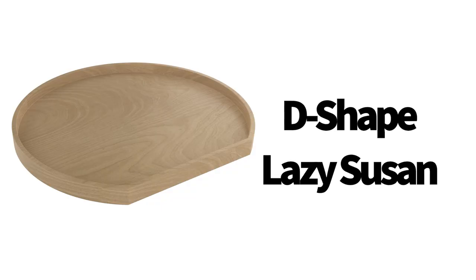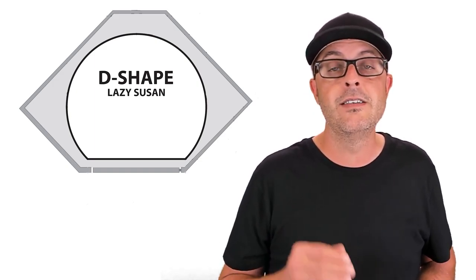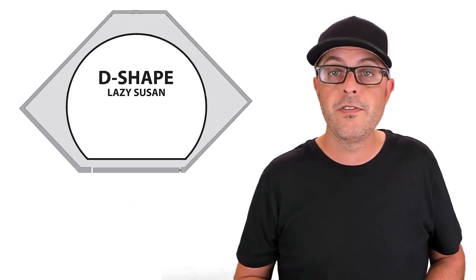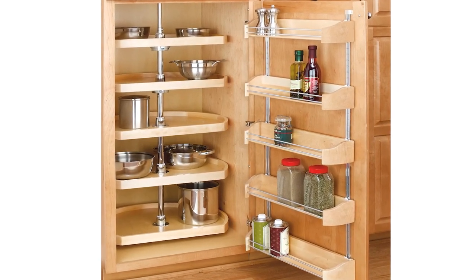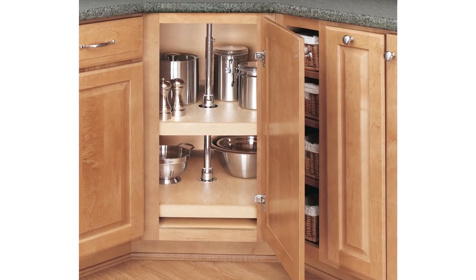Number three is the D-shaped Lazy Susan. For diagonal 45 degree wall and base cabinets the D-shaped Lazy Susan is the perfect choice. This type of Lazy Susan can be used in standard cabinets and in 45 degree angle cabinets as seen here.